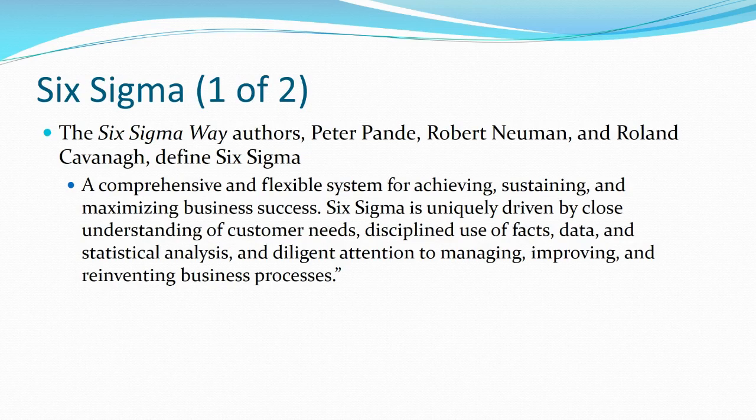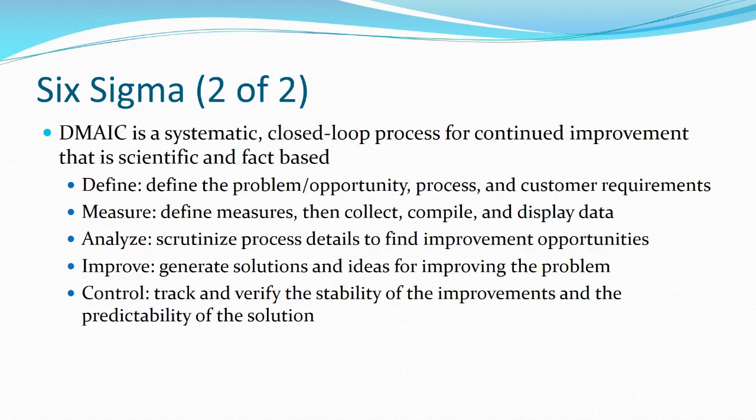Six Sigma is a very popular business-centric method of ensuring quality, measured by a belt system — someone more versed in quality could be a green belt or a red belt. It's a way to align strategic processes with quality. As part of Six Sigma, we have the acronym DMAIC: Define the problem, Measure what it is you're measuring, Analyze where problems might lie and where defects may come from, Improve the process or product, and Control — on a regular basis, reassess.